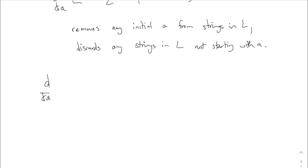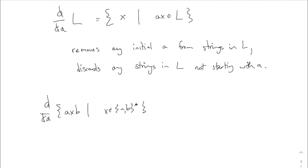Some simple examples. What is the derivative with respect to 'a' of {axb | x ∈ (ab)*}? That means all strings that start with 'a', then have some middle part, then end with a 'b'. This is a fairly easy one. You take all the strings from this language and remove any initial 'a'. All of these strings begin with 'a'. When you take the derivative, it removes the 'a' from the beginning, and you get whatever's left over. So this is just xb.